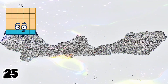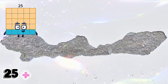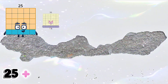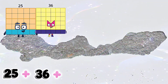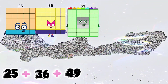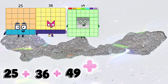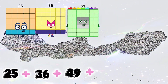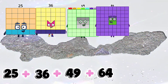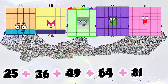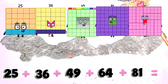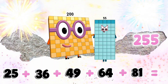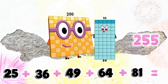25 plus 36 plus 49 plus 64 plus 81 equals 255.